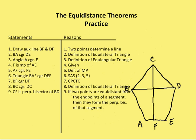For the formal proof: I draw auxiliary lines BF and DF — two points determine a line. BA is congruent to DE by the definition of equilateral. Angle A is congruent to angle E by the definition of equiangular. F is the midpoint of AE, which is given, so AF is congruent to FE. By side-angle-side, the two triangles are congruent. Therefore BF is congruent to DF, and CB is congruent to CD. Since two points are equidistant from the endpoints of a segment, they form its perpendicular bisector.